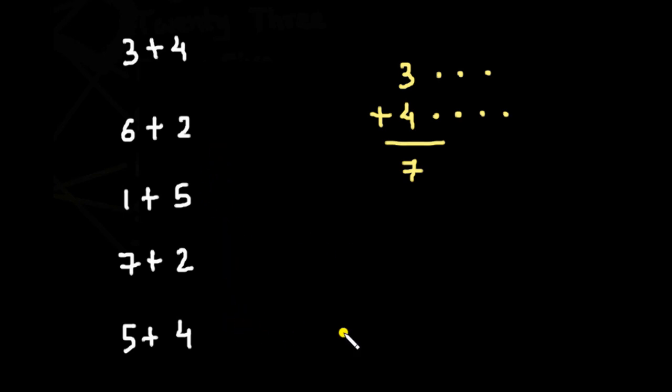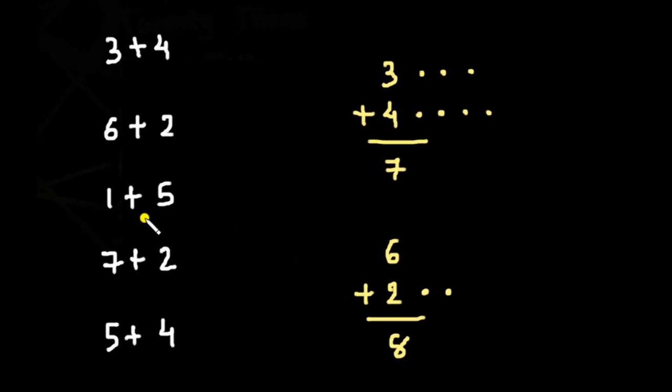Next is 6 plus 2. Here we have 6, and we want to add 2 to this number. So let's count 2 more numbers after 6. We have 6, then for 2, we put 2 dots. So after 6, we have 7, 8. The answer is 8. Very easy.